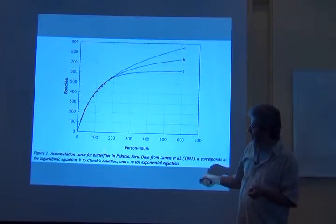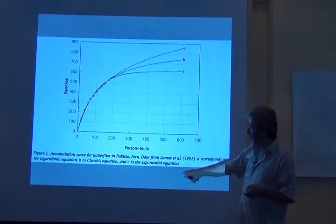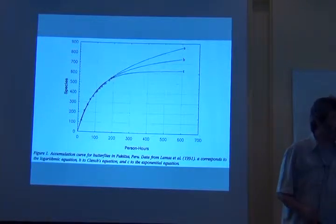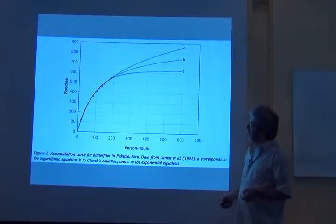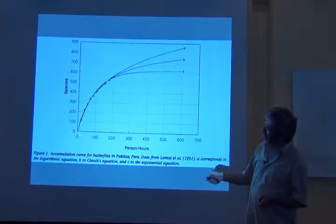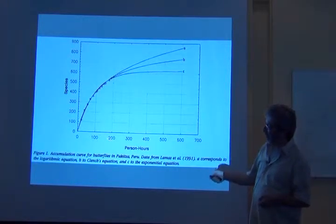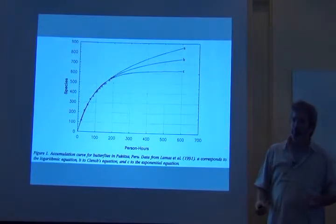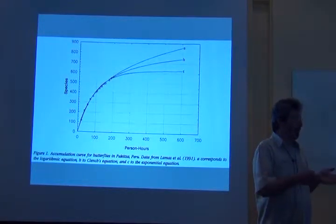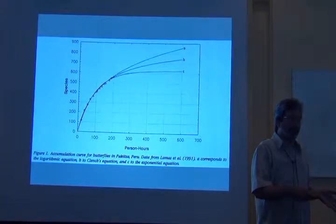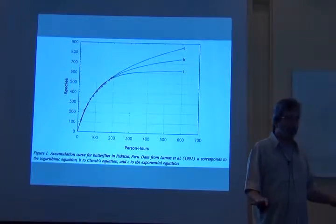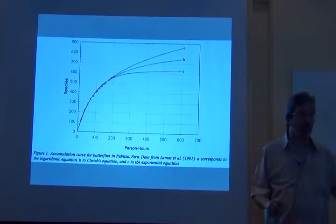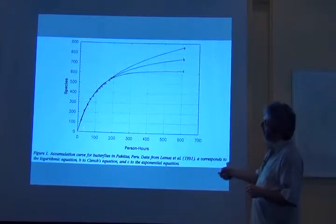They started doing some interesting things, essentially going beyond just looking at the curves and eyeballing them. What they did was explore some data sets. Here's an accumulation curve for butterflies in Paquiza, Peru. They were pulling data from publications that had provided the original data, the presence absence matrix. What they're doing is fitting curves. If you can assume that this sampling, in this case the unit of sampling is person hours, if you can assume that each person hour had an equal probability of detecting a new species to the inventory, we know that's a bad assumption. But if you can either assume it doesn't make that much difference or just live with it, state your assumption and live with it.